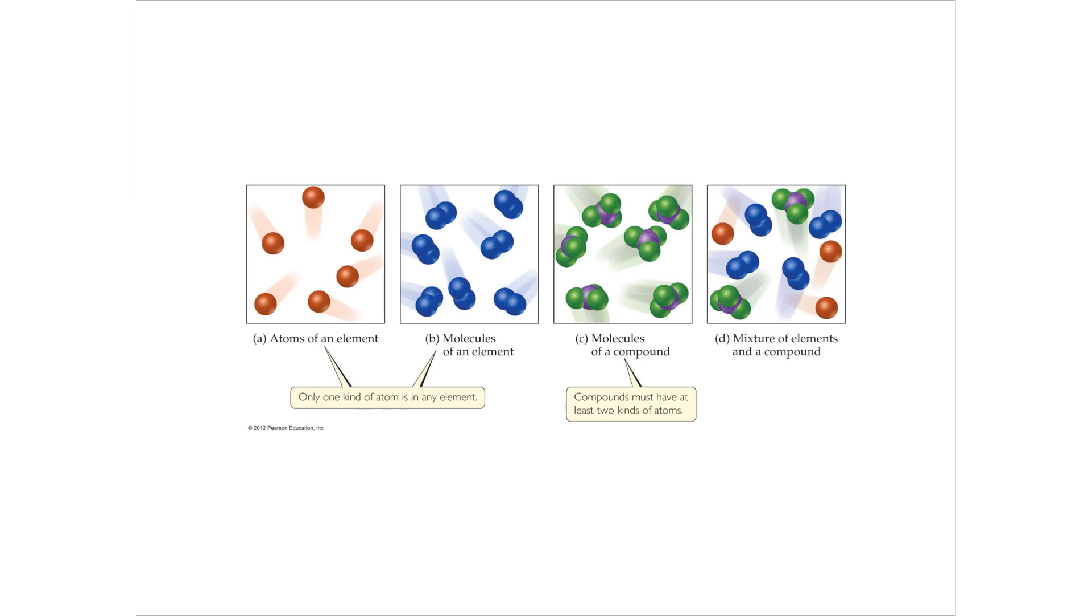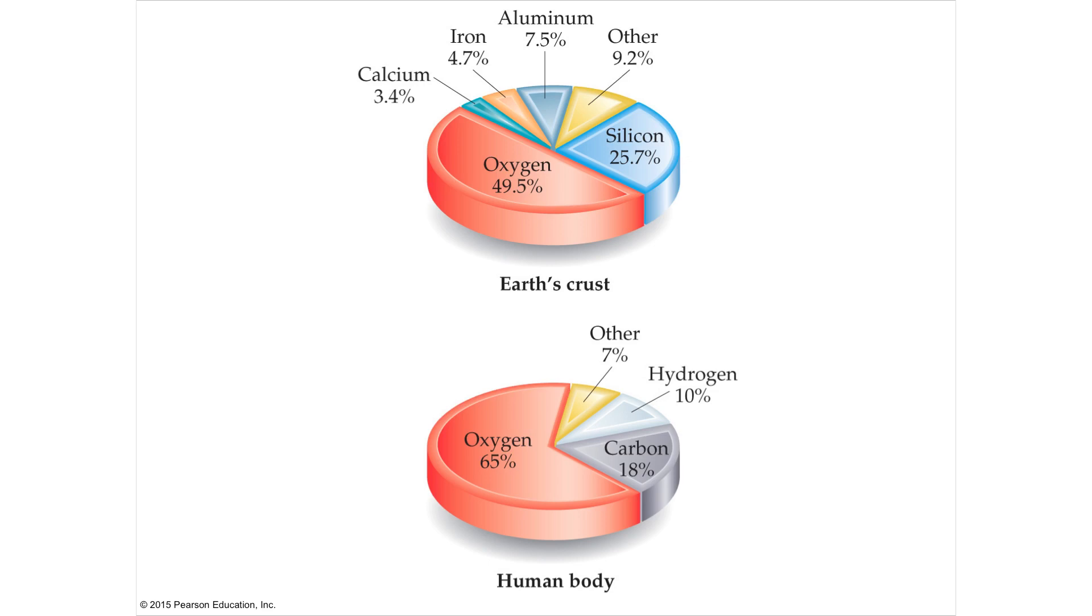A compound is two or more elements that are chemically combined with each other. As I said, there's about 118 known elements and they vary in abundance. So oxygen, silicon, aluminum, iron, calcium make up about 90% of the Earth's crust.